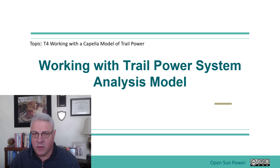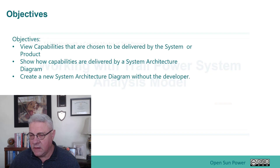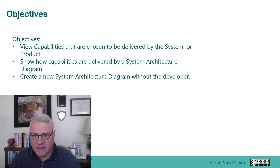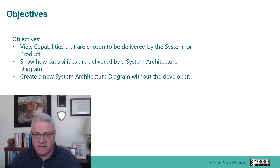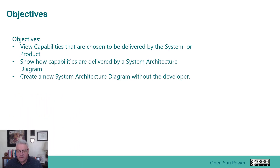Today I'm going to talk about working with the TrailPower system analysis model. The system analysis model comes after the operational analysis model. We'll view the capabilities chosen to be delivered by the system, show how those capabilities are delivered through a system architecture diagram, and create a new system architecture diagram without the developer entity that's involved in the previous sections of the class.